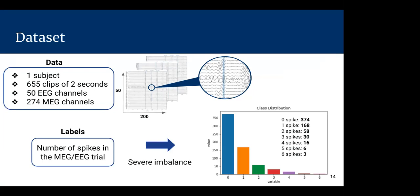The dataset corresponds to a single subject — a child — and contains 655 clips of two seconds with EEG and MEG channels: 50 EEG channels and 274 MEG channels for this subject. The ground truth is built by counting the number of spikes present in each trial. As you may see, this results in a severe class imbalance, because as the number of spikes increases, the number of trials containing that many spikes decreases. This imbalance will be taken into account during training.